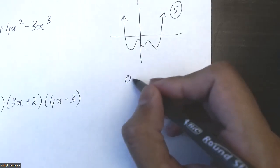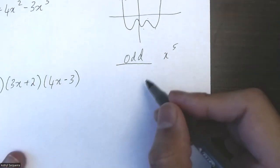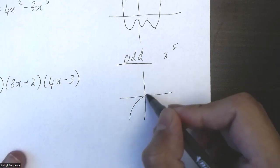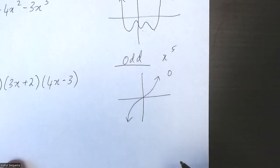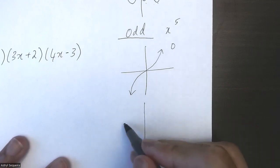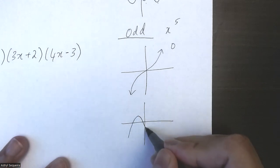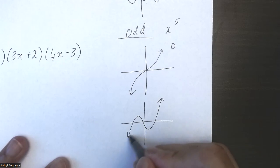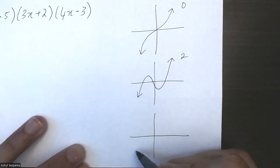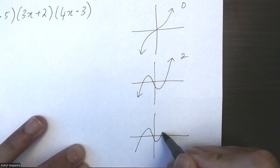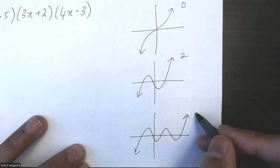Let's go to odd functions next. For odd functions, I'll use x to the power of five. x to the power of five can look like this, which is basically an x cubed function, and it has zero turning points. x to the power of five can also look like this, which is another version of a cubic function, and this can have two turning points. And x to the power of five will most of the time look like this, which has one, two, three, four turning points.